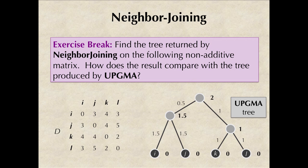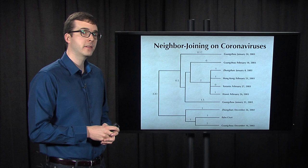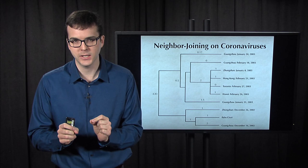Of course, we can also apply neighbor-joining to the non-additive distance matrix that we derived from coronaviruses. But we can also apply it to a distance matrix that we obtain from pairwise alignment of spike proteins taken from different patients, as well as from the palm civet coronavirus.